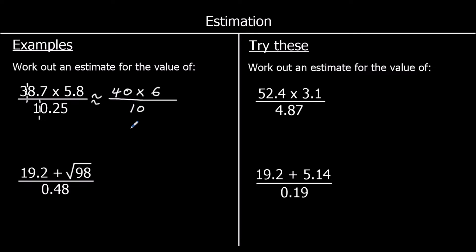So we've got 40 × 6 ÷ 10. That's an easy calculation: 4 × 6 is 24, so 40 × 6 is 240. Dividing by 10 gives 24. So 38.7 × 5.8 ÷ 10.25 is approximately 24.